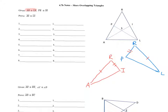Now look at what they're asking you to prove: they're asking you to prove that AS is congruent to LS. Those are not sides of those two triangles, but those two triangles are the ones we have information for. So you first have to prove that these two triangles are congruent so that we can use CPCTC to prove two other things will be congruent.